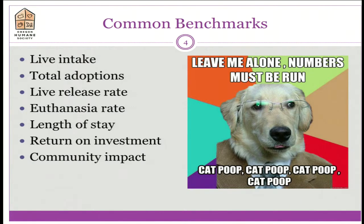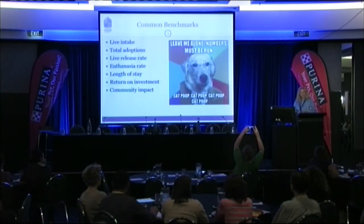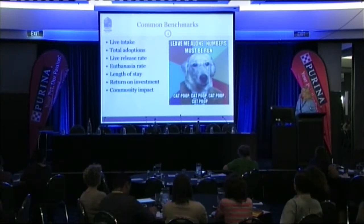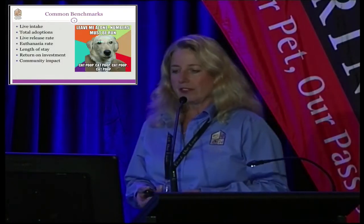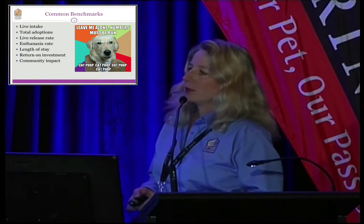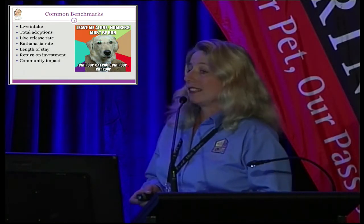Here are some common benchmarks we use in the sheltering world: live intake — the number of animals you took in alive; total adoptions; and that live release rate, or save rate as I prefer to call it — how many lives came through your shelter and left as a live outcome. And the euthanasia rate — the number of animals that did not leave alive.